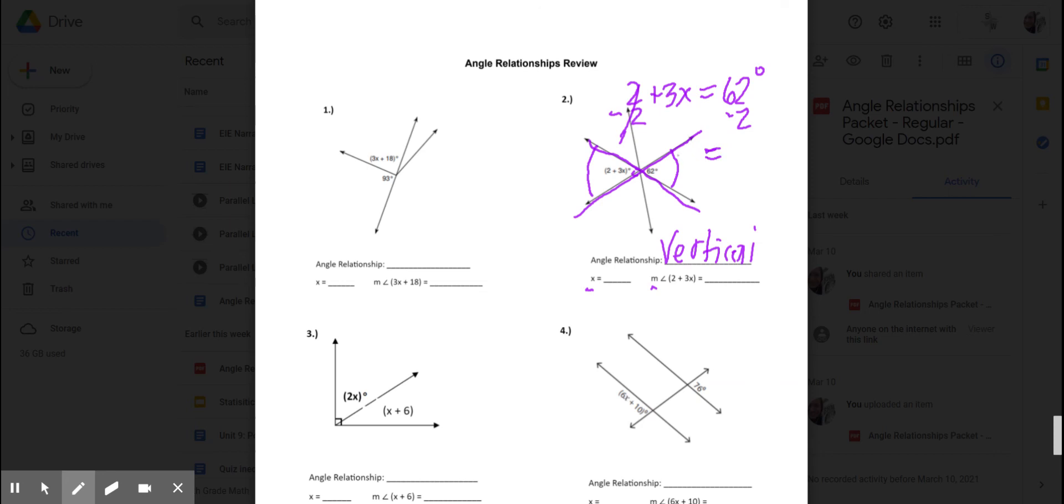So, when I get rid of the 2, I have 3x left. And 62 minus 2 is 60. And now, I'm going to divide both sides by 3. And I have x equals 20. So, now I found what I think x equals 20. But now, I have to check.